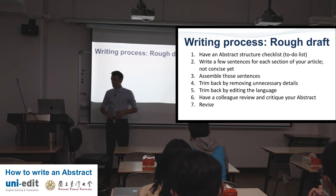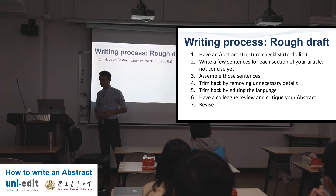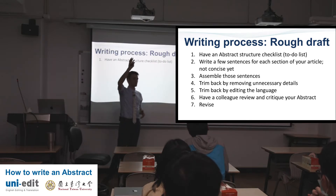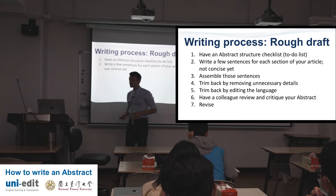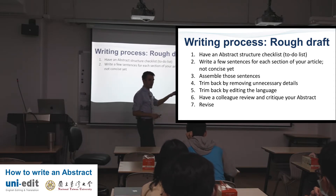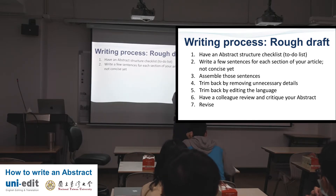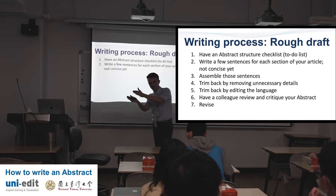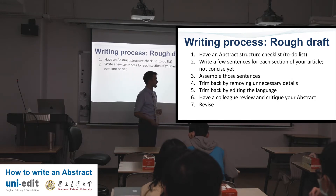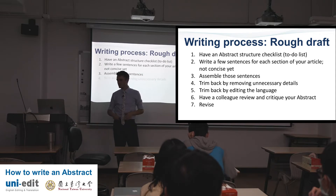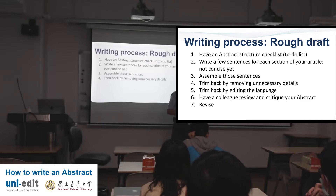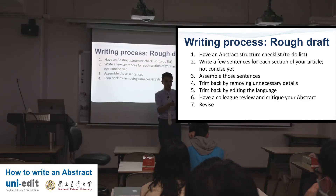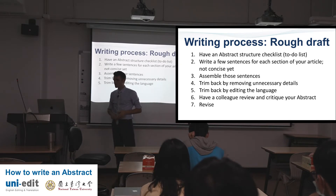Writing process — rough draft: have an abstract structure checklist. I'll show you many versions of how an abstract flows. Write a few sentences for each section of your article — this is not concise yet, you're not writing your abstract. When you have your introduction finished, write two or three sentences about it. When you finish your methodology, summarize it. This will form the basic framework for your abstract. Assemble those sentences, put them all together, and trim back by removing unnecessary details. Trim back by editing the language.